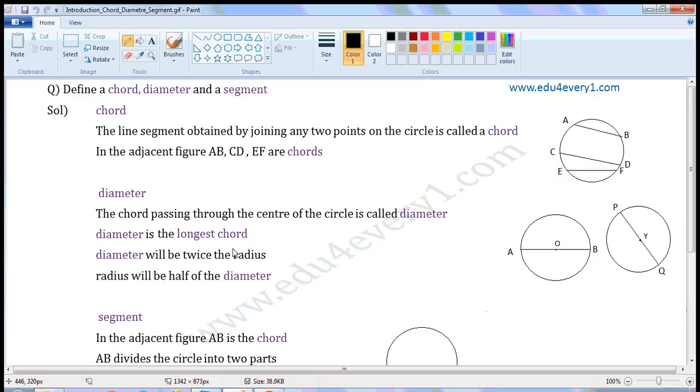Diameter is the longest chord. Diameter will be twice the radius. Radius will be half of the diameter.